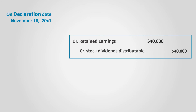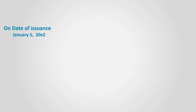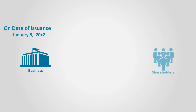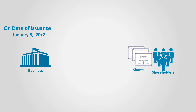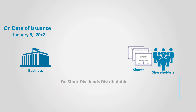On the declaration date, this is recognized by debiting retained earnings and crediting stock dividends distributable for $40,000. On January 5th, the business is to issue new shares to shareholders who were on record on December 10, 2000 X1. The business has to reduce the equity by debiting stock dividends distributable by $40,000 and then add $40,000 to common shares.